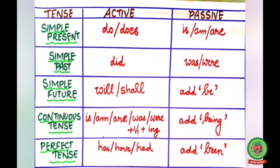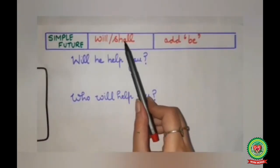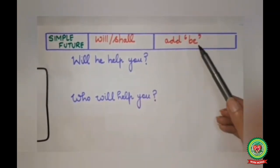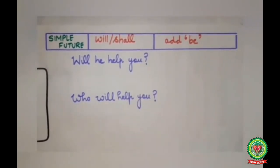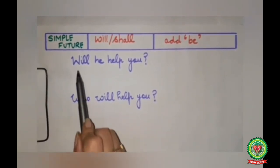Now we will discuss the third type: active and passive interrogative for simple future. After 'will' or 'shall', we have to add one more word — that will be 'be'. 'Be' will be added in the answer. Now we will do the first question: 'Will he help you?'